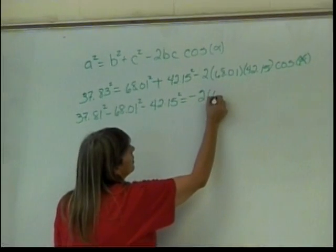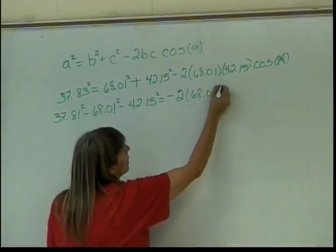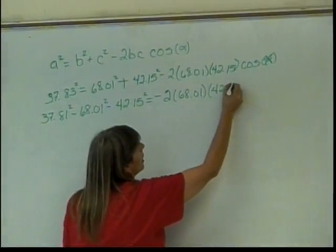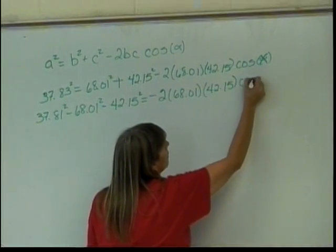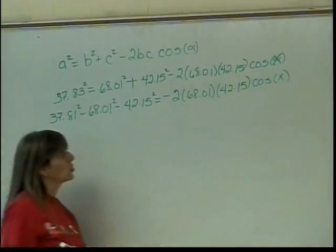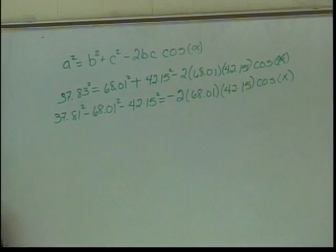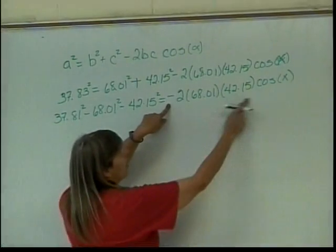That's enough for now. We don't want to get too lost. 42.15 times the cosine of x. Now what should I do? Those were easy to move. Divide by what? Yeah, divide by all of this stuff, right?